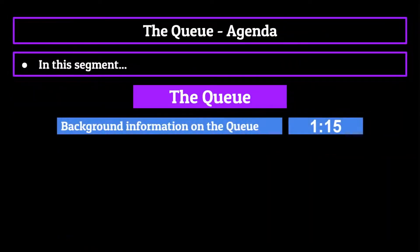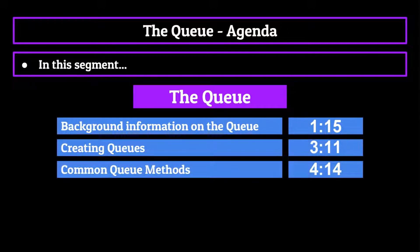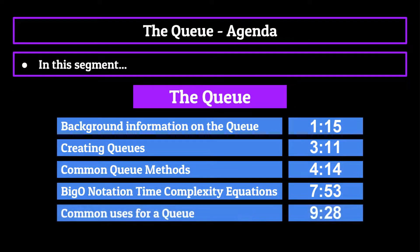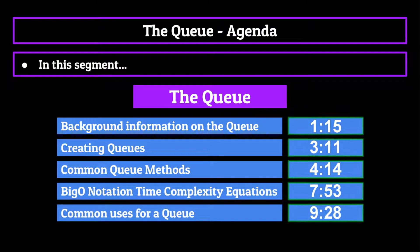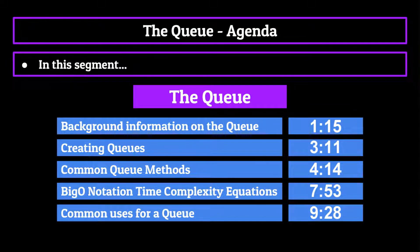Today we're going to start with some background information on the queue, then dive into how we actually create queues. From there we'll discuss some common queue methods used to interact and modify it, and of course then we'll talk about its big O notation time complexity equations before finally going over some common uses for the queue in computer science in the real world. The timestamps on your screen now will take you to the point in the video where we discuss each of these topics, so feel free to skip around.